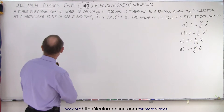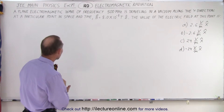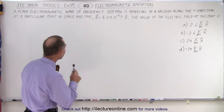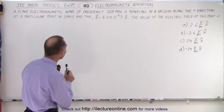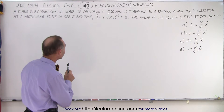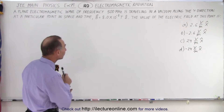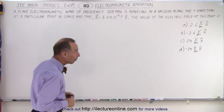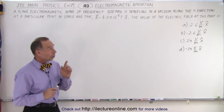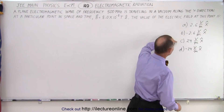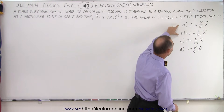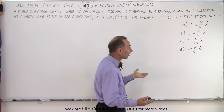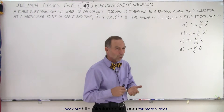The question reads: a plane electromagnetic wave of frequency 500 megahertz is traveling in a vacuum along the Y direction. At a particular point in space and time, the magnetic field is equal to 8 times 10 to the minus 8 Teslas in the Z direction. The value of the electric field at this point is one of four possible answers — either positive or negative 2.6, or positive or negative 24.